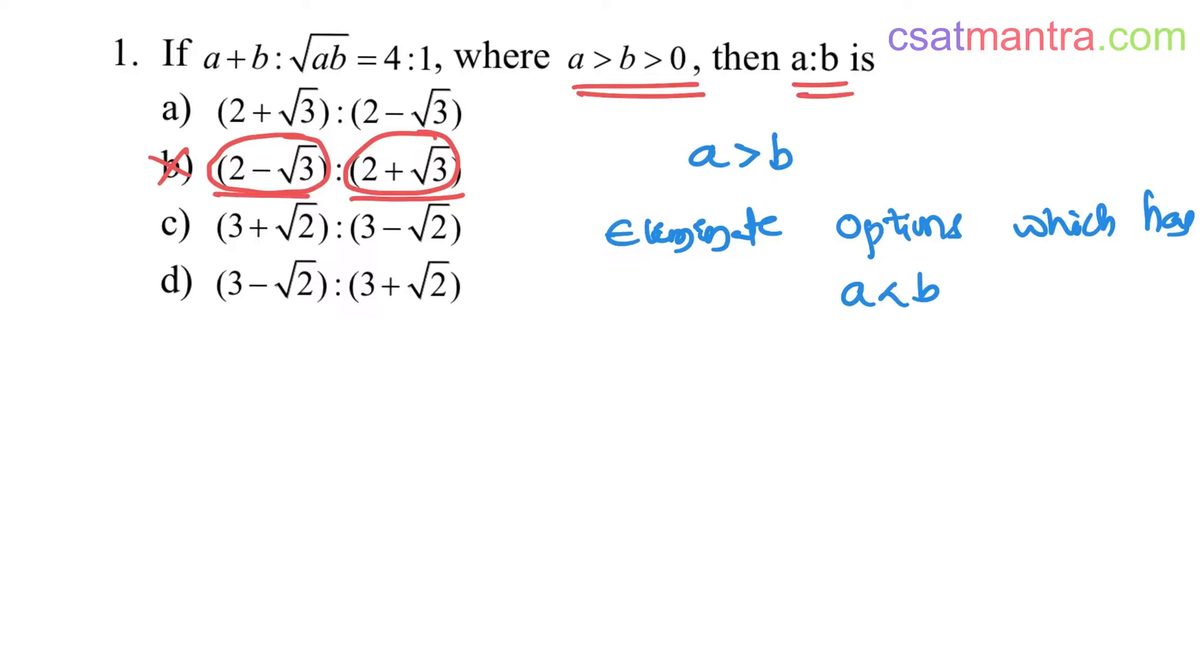Same goes with option D. 3 minus root 2 is less than 3 plus root 2. So option D is also eliminated.